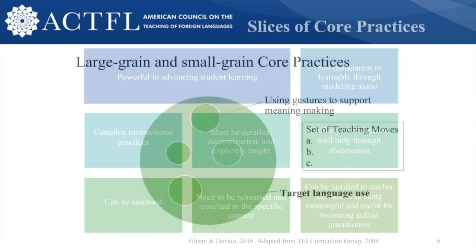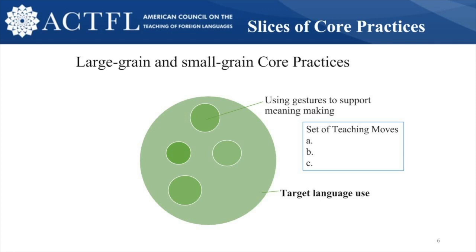With the core practices, there are large grain and small grain core practices. It's important to understand that these practices are very complex. Let's take target language use as an example. ACTFL recommends using the target language at least 90% of the time in the target language classroom — dual language classrooms use 100%. Using gestures is a great way of staying in the target language so students know what's being discussed. Visuals and even acting out actions can increase student understanding, and depending on what's being taught, there's a set of moves that can be done to aid student understanding.